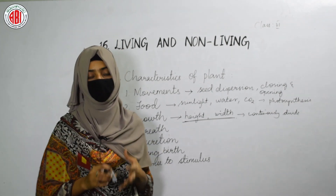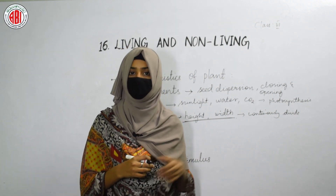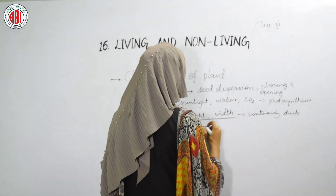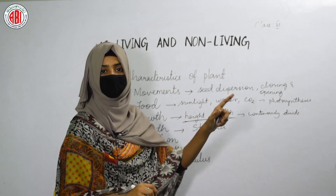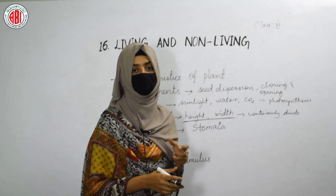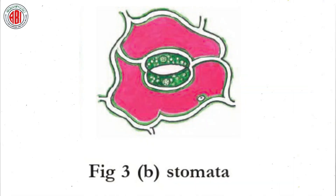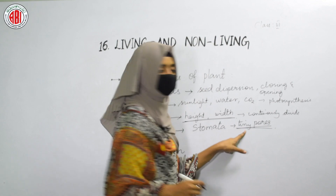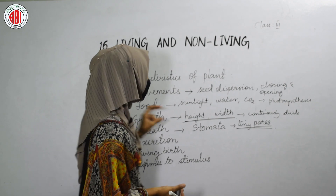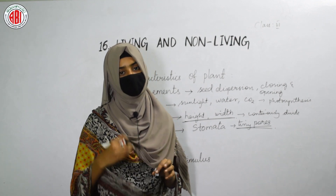The next characteristic is breathing. Plants don't have lungs or a nose; they have a special part called stomata. Stomata are tiny pores found on the leaf surface through which gaseous exchange takes place — that process is called breathing. Stomata close and open to regulate this gaseous exchange. Stomata play a major role in the process called respiration, that is, in the breathing process.